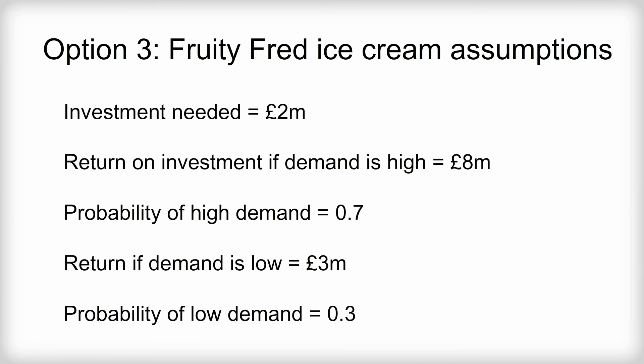For Fruity Fred, the investment needed would be £2 million. The return if demand is high would be £8 million, with a probability of that high level of demand of 0.7. If demand is low, the return would be £3 million, with a probability of that lower level of demand of 0.3.